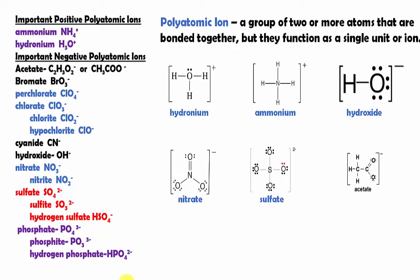And these are called polyatomic ions. So polyatomic ions are basically a group of two or more atoms that are bonded together, but together they function as a single unit or a single ion.